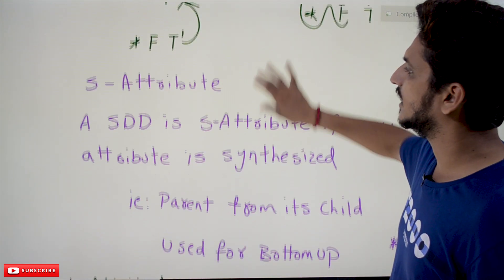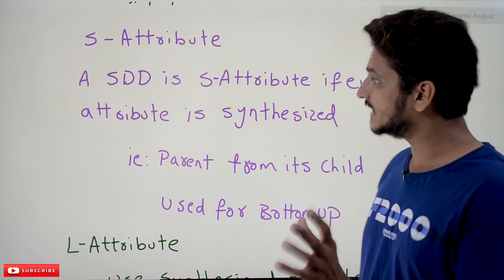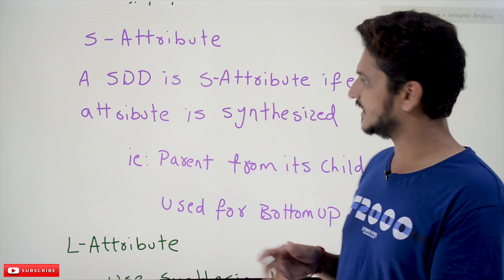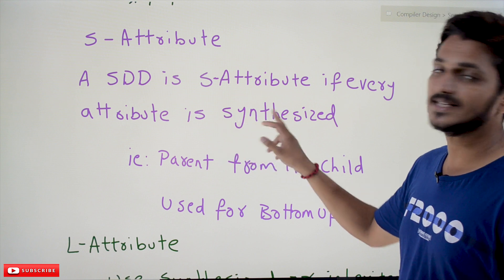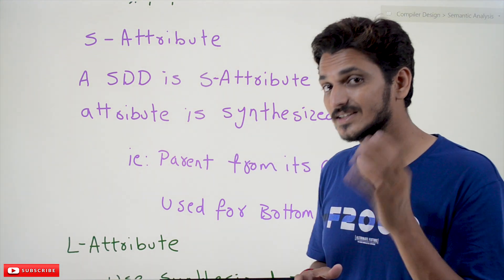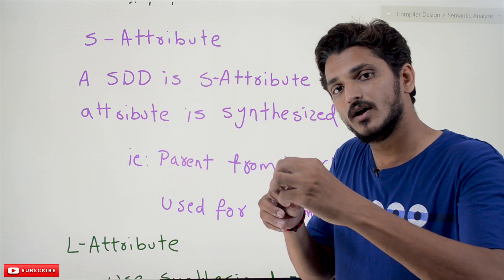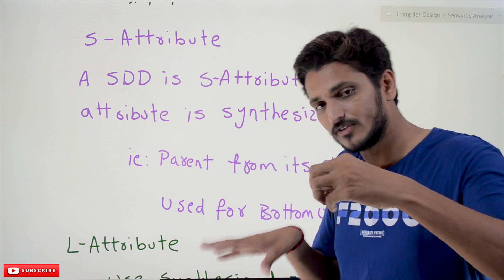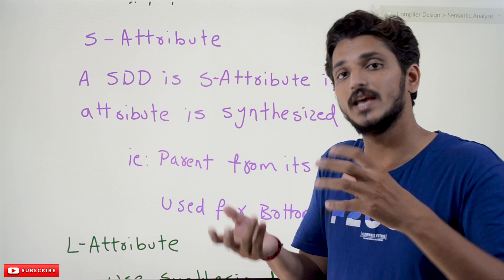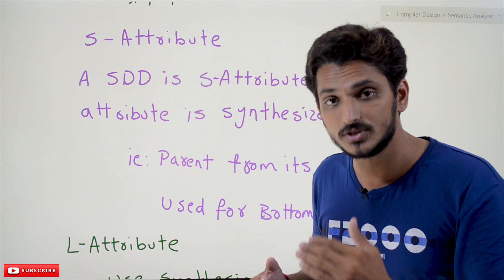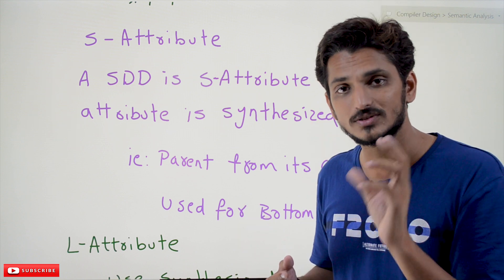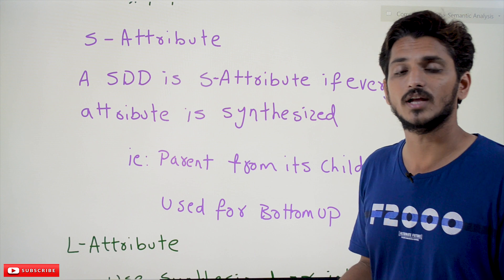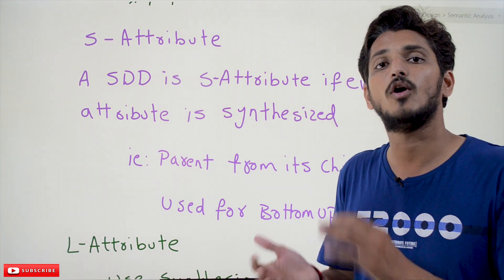Coming to the point: S attribute and L attribute. An SDD is said to be an S-attribute definition when every attribute is a synthesized attribute. As we discussed in our previous class, a synthesized attribute means the parent attribute can use values only from its children or itself. If all the attributes in our SDD follow this condition, we call it an S-attribute SDD. The use of this is that if you follow this, you are not going to form cycles.